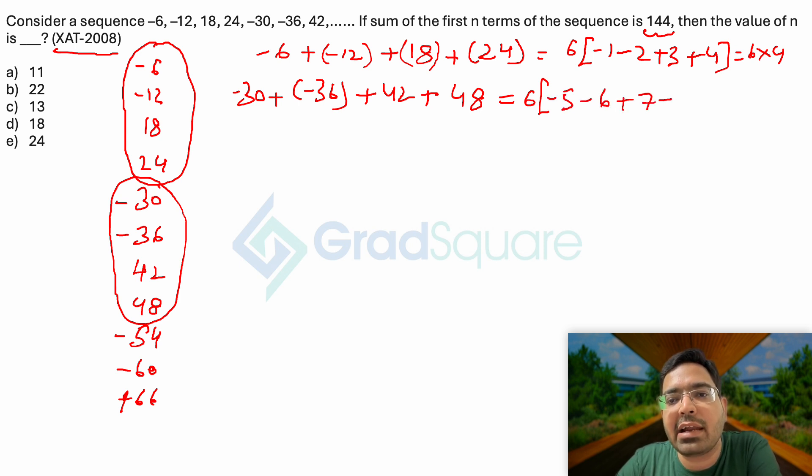plus 7 and plus 8. 8 plus 7 will give me 15 and 6 plus 5 will give me 11. So minus 11 plus 15 will give me again 4, and it is turning out to be again 6 into 4, like the previous set of numbers.